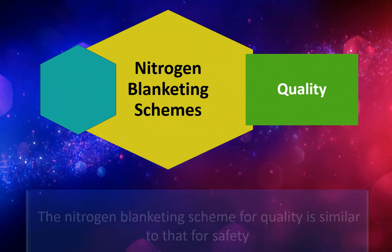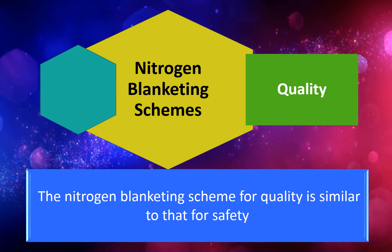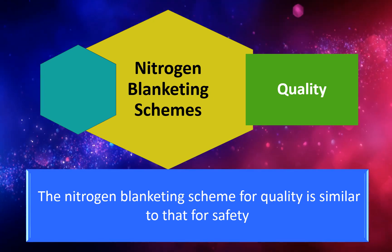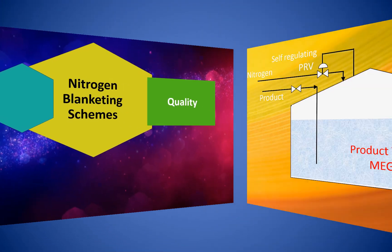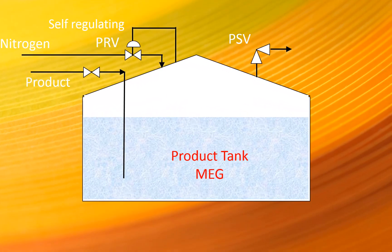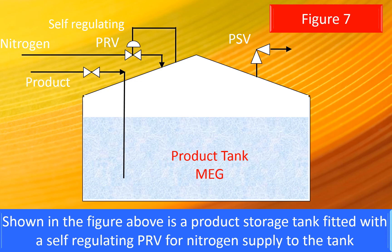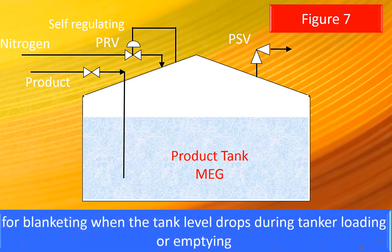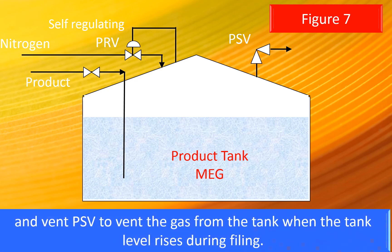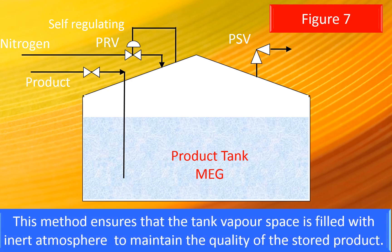Blanketing Scheme for Quality: The nitrogen blanketing scheme for quality is similar to that for safety. Shown in the figure below is a product storage tank fitted with a self-regulating PRV for nitrogen supply to the tank for blanketing when the tank level drops during tanker loading or emptying, and a vent PSV to vent gas from the tank when the tank level rises during filling. This method ensures that the tank vapour space is filled with an inert atmosphere to maintain the quality of the stored product.